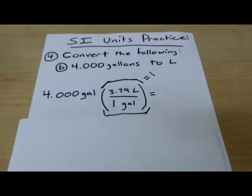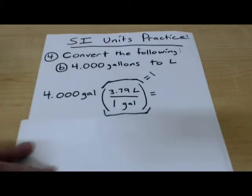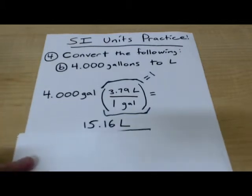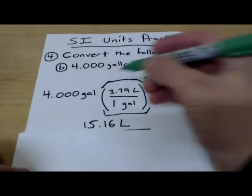Now, we have to remember that 3.79 is an approximation to three decimal points. But, close enough to where, for all intents and purposes and for our purposes, it's going to equal one. So, that's going to give us 15.16 liters. The gallons cancel out. We're left with liters as our unit.